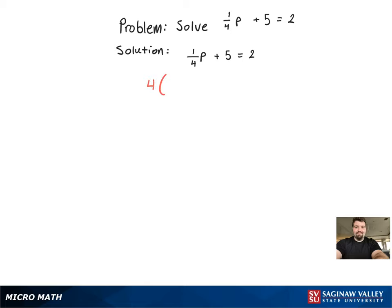Since there's a fraction in the equation, what we're going to want to do is multiply both sides of the equation by the LCD, which in this case is 4. Once we do that, it should guarantee that we won't have any fractions anymore.